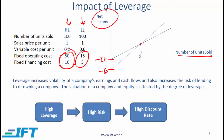This point represents the sales level at which net income is the same for both companies. But notice: as sales increase beyond 100, the benefit is much greater for HL, which is another way of saying HL has higher leverage. A 1% increase in sales will have a higher percentage increase in net income for the high leverage firm relative to the low leverage firm.